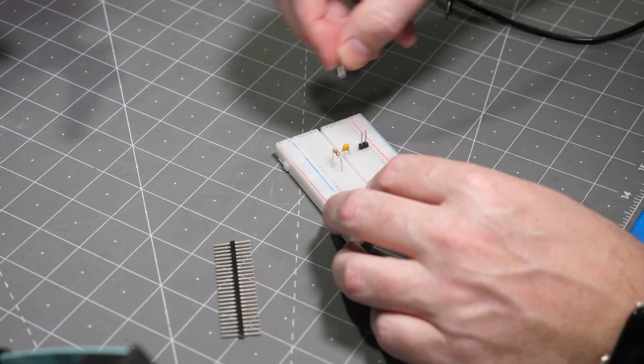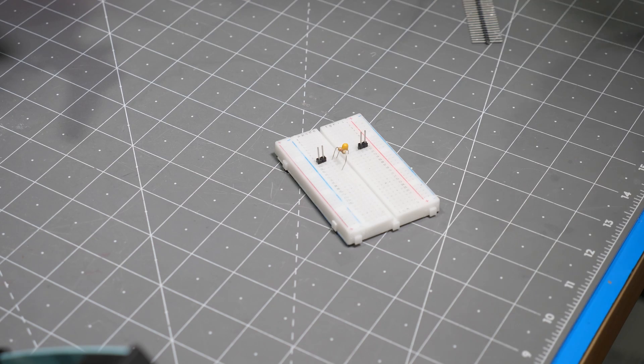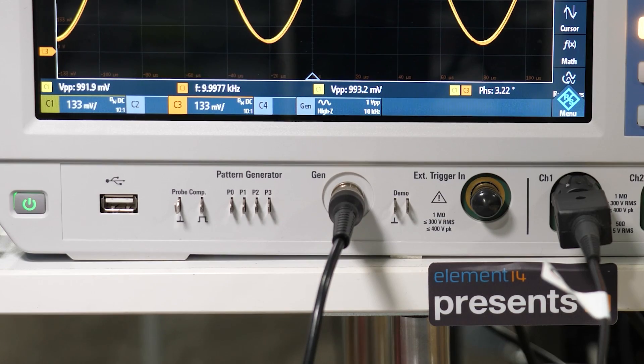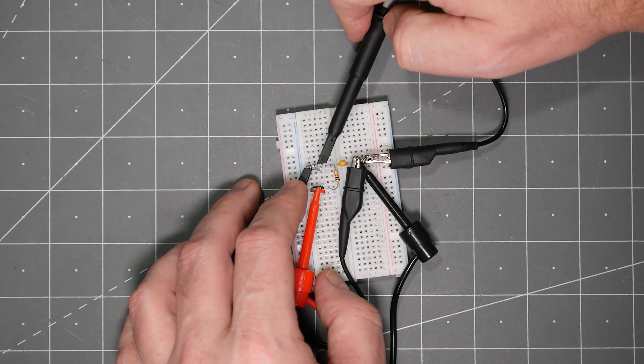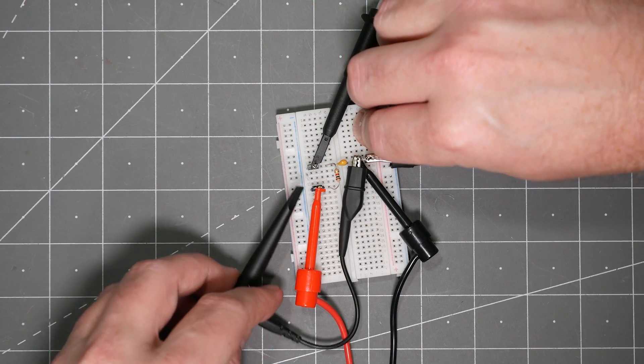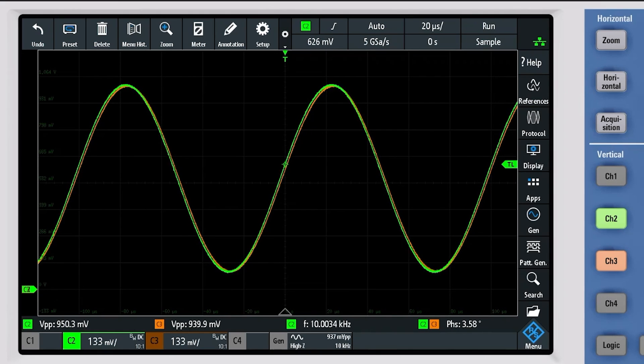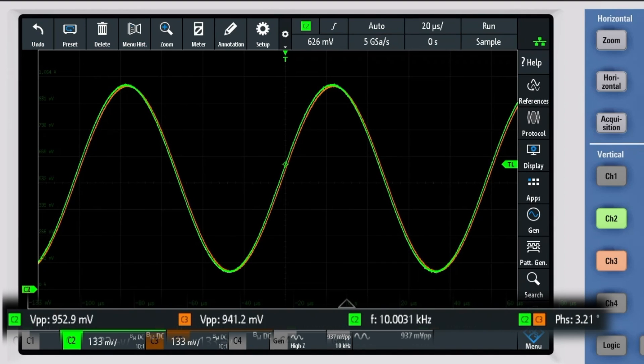Next, I used the breadboard and connected up a resistor and capacitor as a low-pass filter. For the input, I am using the waveform generator built into a scope and connecting two scope probes. They're measuring the input and output. On the scope, the green waveform is the input and orange is the output. Right now, they are basically on top of each other. On the bottom, there are measurements to show their peak-to-peak voltage and the input frequency.